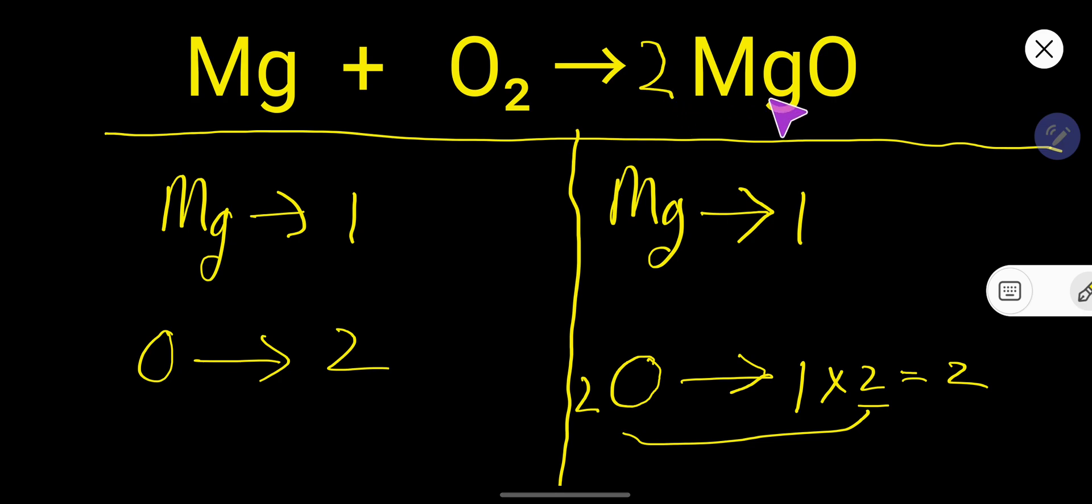Now the number of magnesium atoms is 2. So let us check this number. The number of oxygen atoms is 2. Magnesium here, oxygen 2 and 2. Oxygen is balanced but now magnesium is not balanced.